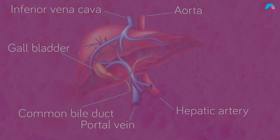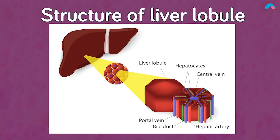The basic functional unit of the liver is called the lobule. It's a hexagonal structure 1 to 2 mm in diameter, made up of hepatocytes organised around a central vein which drains blood from the liver.